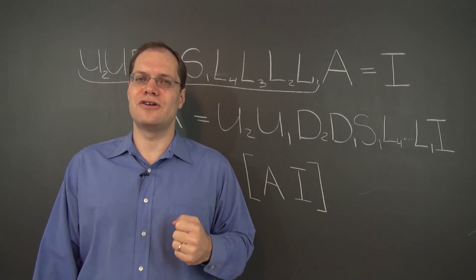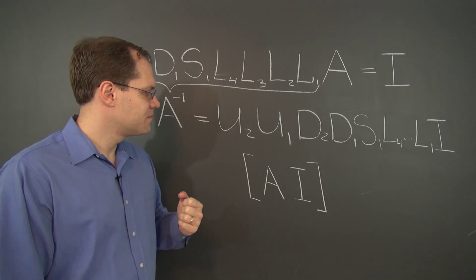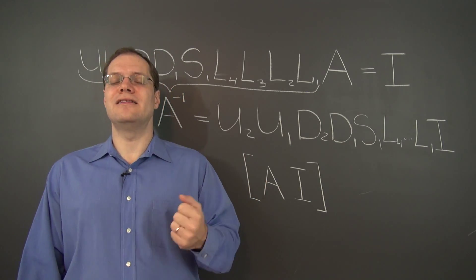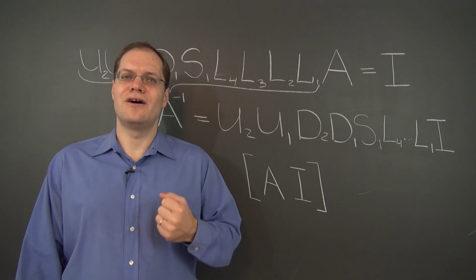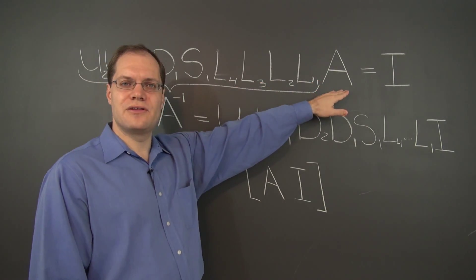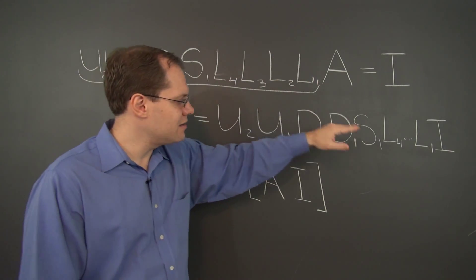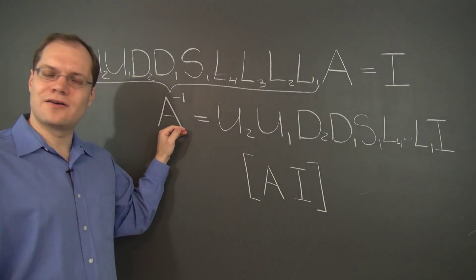So there you go. This is our third and final justification for the inversion algorithm and yet another vivid application of elementary matrices. We started with an algorithm. We translated it into the language of matrices. In the language of matrices, we got our identity.